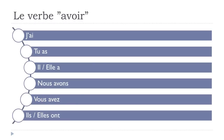And the last forms: you get a final -s on both 'ils' and 'elles,' and you make the liaison link: ils ont, ils ont. And the feminine form: elles ont, elles ont.